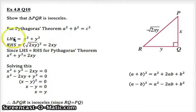Since the left-hand side equals the right-hand side for Pythagoras' theorem, and it should apply because it's a right-angled triangle, therefore we can say that x squared plus y squared is equal to 2xy. We need to solve this equation, and the best thing to do is to take the 2xy over to the left-hand side: x squared plus y squared minus 2xy equals 0.